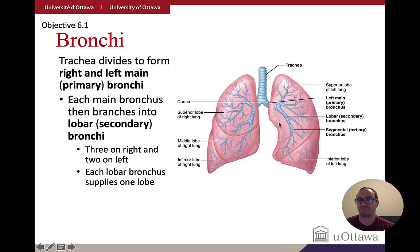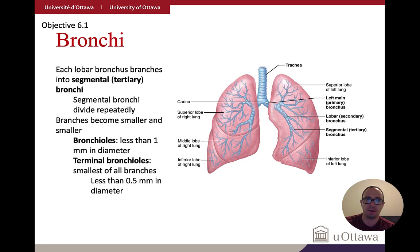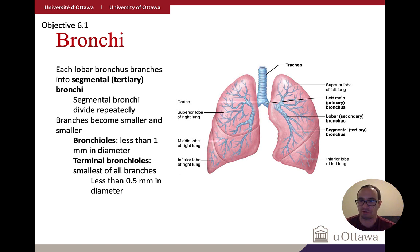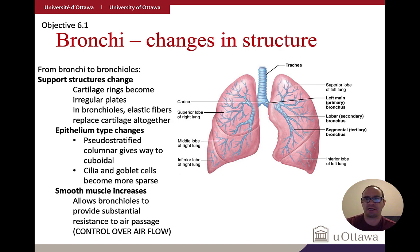When the bronchi become less than one millimeter in diameter, they are called bronchioles. Terminal bronchioles are even smaller — less than one millimeter. This creates a tree-like pattern snaking throughout the lungs: three lobes on the right and two lobes on the left.